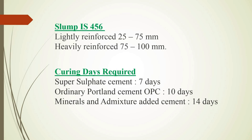While pouring concrete, the slump test is important. When the slump test is taken, for lightly reinforced concrete the slump is 25 to 75 mm, and those results are recorded. For heavily reinforced concrete, the slump required is 75 to 100 mm.